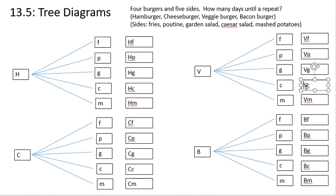So, for example, this uppercase right here, the uppercase V, lowercase C, indicates a veggie burger with a Caesar salad. So, that's what all of these mean.